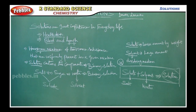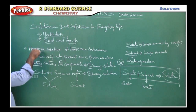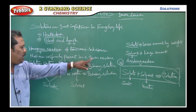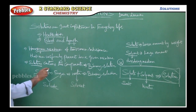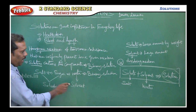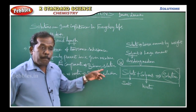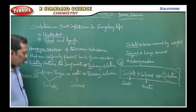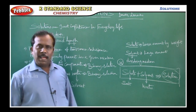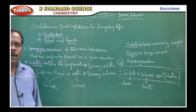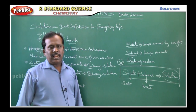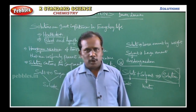When two or more substances are present uniformly in a given mixture, that is called a homogeneous mixture. The solution contains two components — solute and solvent — and is called a binary solution. The example of a binary solution is salt plus water forming a solution.